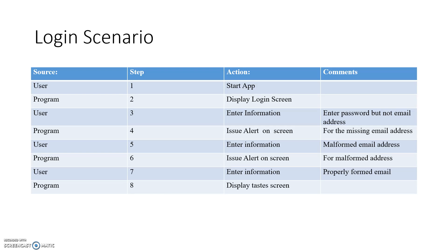The user at step five then enters an email address, but it's a malformed email address. So step six, the program issues another alert on the screen for the malformed email address. At step seven, the user enters his email finally correctly, as well as the password entered in step three. At step eight, the program displays the taste screen.